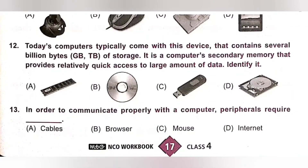Question 12: Today's computers typically come with a device that contains several billion bytes (GB or TB) of storage. It is a computer secondary memory that provides relatively quick access to large amounts of data. Identify it. Today's computers come with a hard disk, which is a secondary storage device. Option D, Hard disk, is the correct answer.